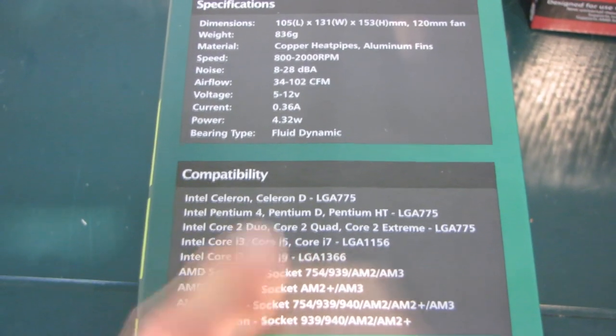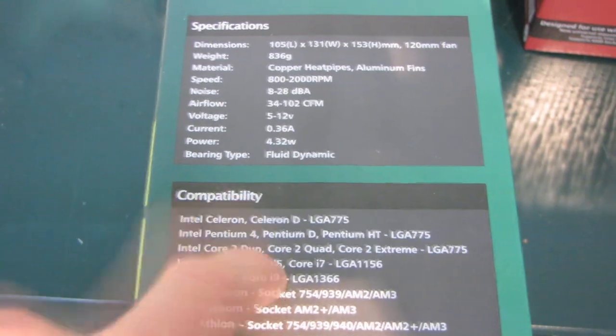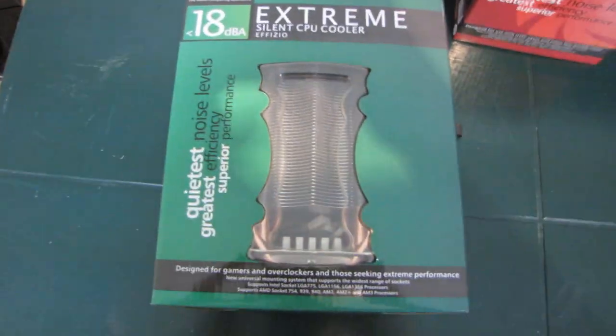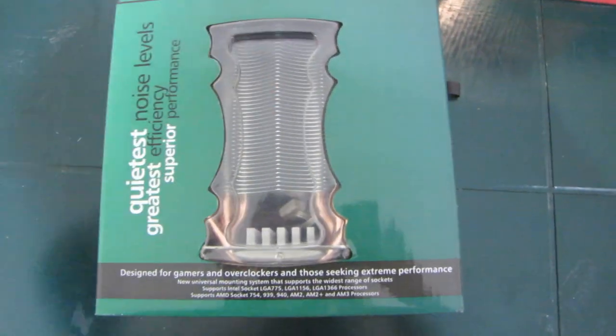So Core i9 is what they were going to call the Core i7 Extreme 6 core, but then they did not end up doing that. I had the box backwards. You can actually see into the box and you can see the overall shape of this cooler.